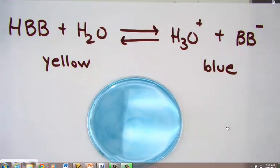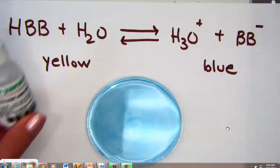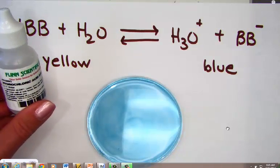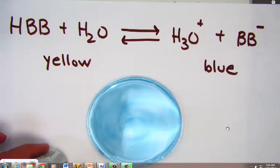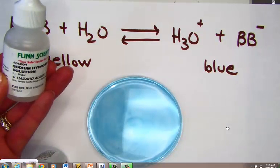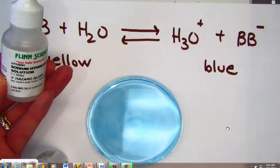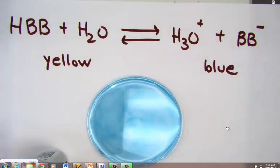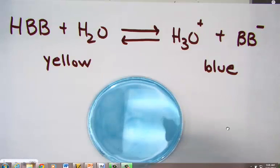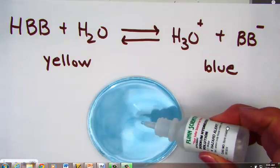Now, the stress that we will be applying — the disturbance to this equilibrium — will be the addition of hydrochloric acid, or the addition of sodium hydroxide, NaOH. Let's begin disturbing this system that's in equilibrium by the addition of sodium hydroxide.